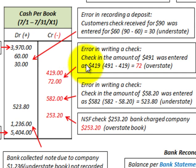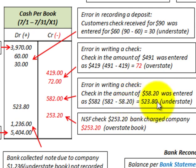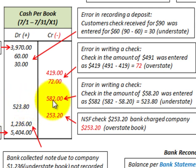Another error in writing a check: a check for $58.20 was entered as $582. So $582 less $58.20 gives $523.80, where the book amount was understated — the cash account was credited for $582 instead of $58.20 by mistake. To correct this, we debit or increase our cash account by $523.80.